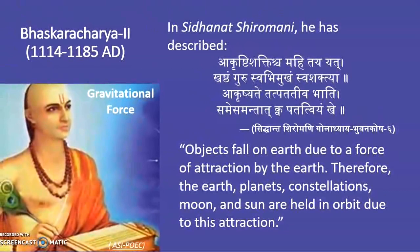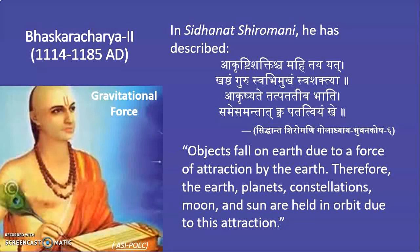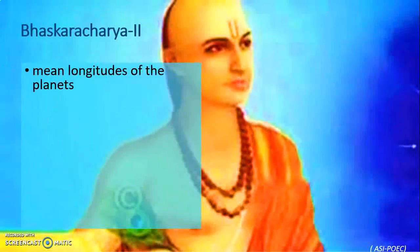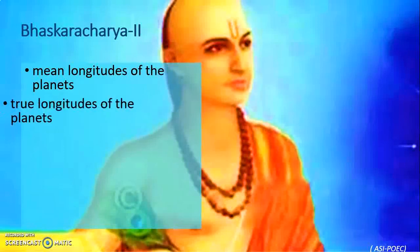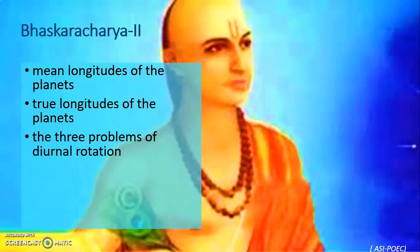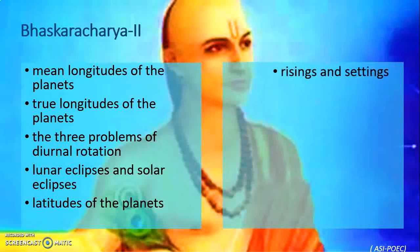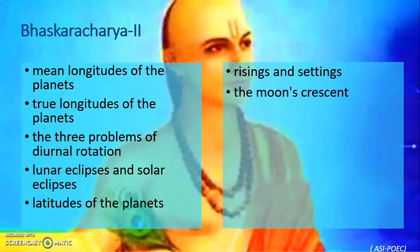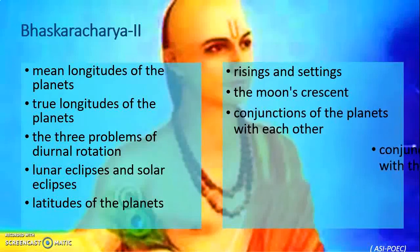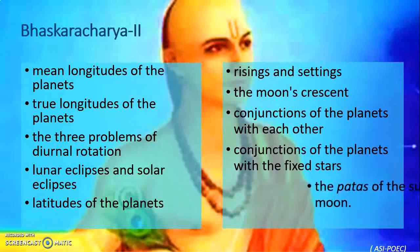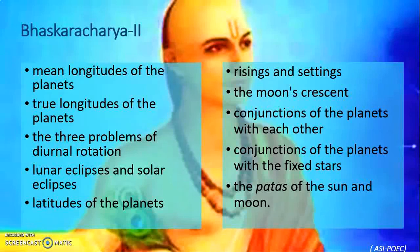He talked about Gurutvakarshan or gravitation around 500 years before Newton. In our ancient Sanskrit literature, you will find a lot of such shlokas where scientific discoveries have been mentioned — in the Rig Veda and the Yajurveda. Bhaskaracharya was also a great mathematician who discussed mean and true longitudes of planets, diurnal rotation, lunar and solar eclipses, latitudes of planets, rising and setting of the Sun, the Moon's crescent, conjunctions of planets with each other and with fixed stars, and the path of the Sun and Moon.